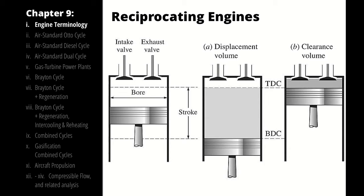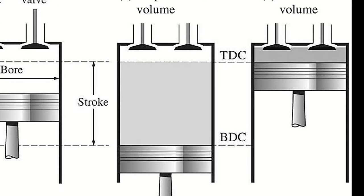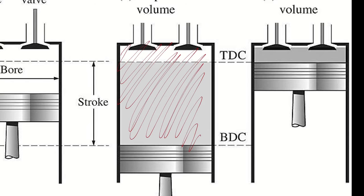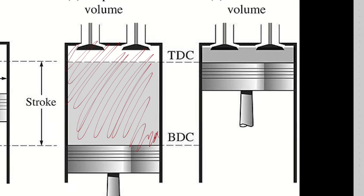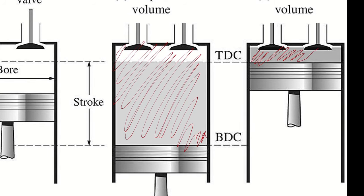We use bottom dead center and top dead center as indications of position as well as volume. For example, the volume at bottom dead center is this entire volume above the piston, and the volume at top dead center is this volume when the piston is in its highest position.